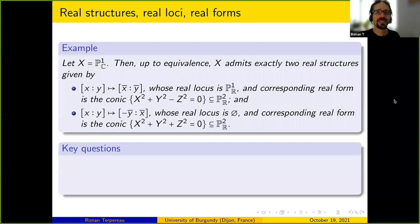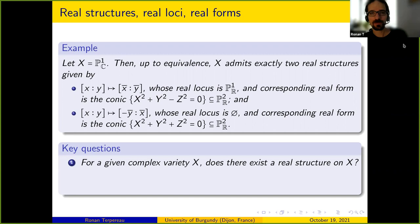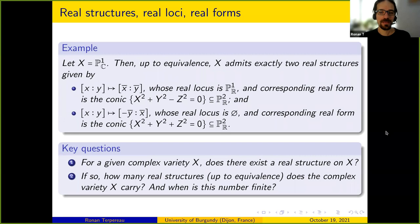The two key questions in this business are: first, an existence problem — for a given complex variety, does there exist a real structure on X? Second, an enumerative problem — if you have one, how many real structures up to equivalence does the complex variety X carry, and when is this number finite?